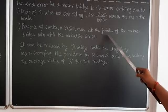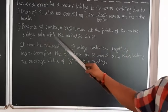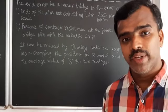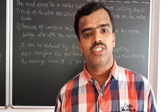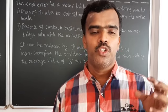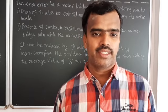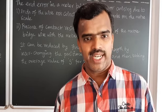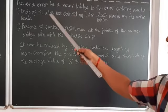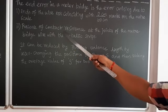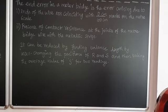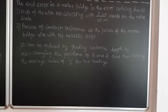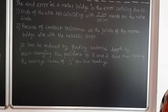The second cause is the presence of contact resistance at the joints of the meter bridge wire with the metallic strips. Generally we use metallic strips and the potentiometer wire is connected in series using those metallic strips. There exists some contact resistance due to the metallic strips, which also causes end error.